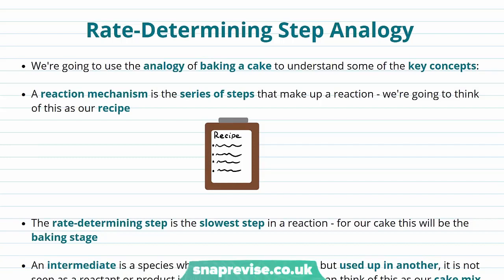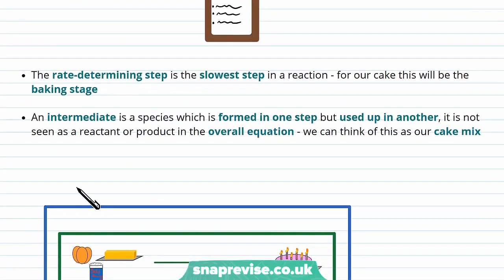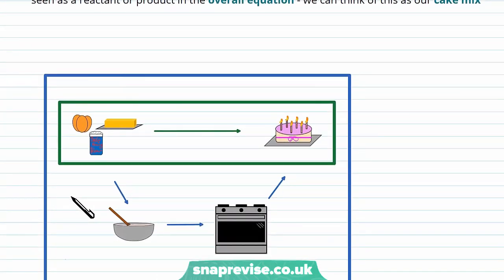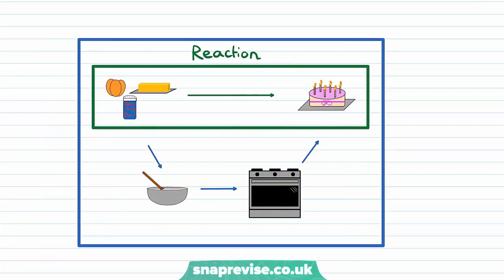First, we're going to use an analogy of baking a cake to understand some of the key concepts. The baking of the cake is going to be our reaction in this analogy. You can see we've got some reactants over here, which are our ingredients—eggs, butter, and self-raising flour. The reaction shows these reactants going straight to the final product, a cake.